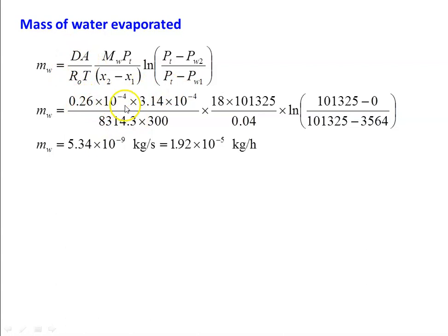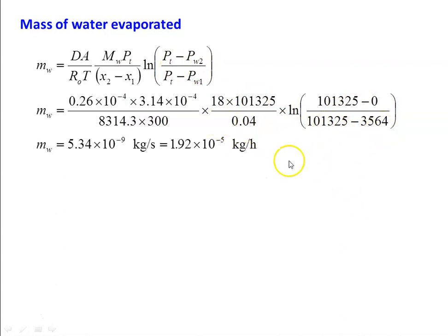Substituting numerical values: D equal to 0.26 into 10 power minus 4, area equal to 3.14 into 10 power minus 4, R0 equal to 8314.3, T equal to 300 Kelvin, MW equal to 18, total pressure is 101325 Newtons per meter square, x2 minus x1 equal to 0.04, logarithm of total pressure minus 0 divided by total pressure minus 3564. Solving, MW equal to 5.34 into 10 power minus 7 kilograms per second.